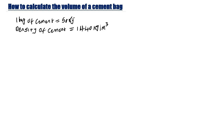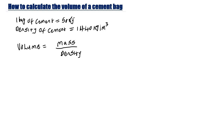Now in order to calculate the volume of one bag of cement, you first need to know the formula for the volume of any object. The volume of any object is equal to the mass of the object divided by the density of the object. This is the formula for volume.